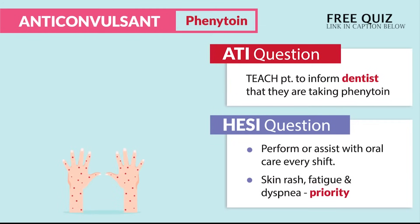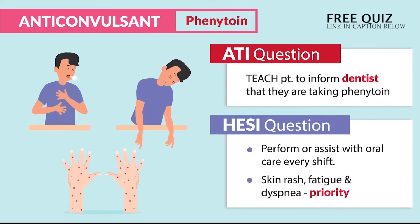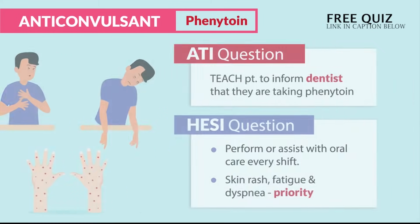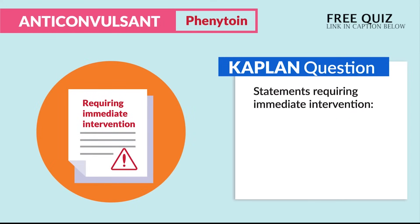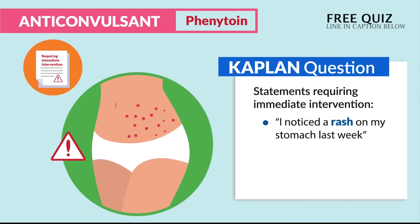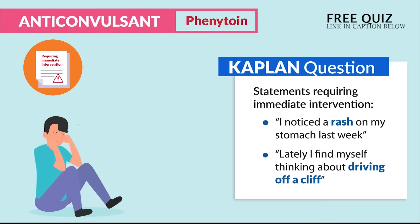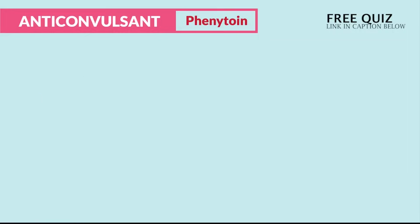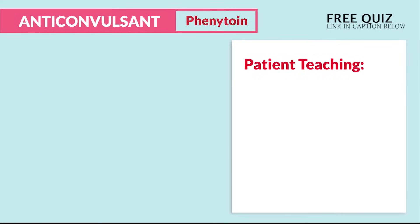A skin rash, fatigue, and dyspnea are priority. Any type of skin rash could mean Stevens-Johnson syndrome, which is very deadly. Kaplan mentions statements requiring immediate intervention, such as: 'I noticed a rash on my stomach last week' — that's deadly Stevens-Johnson syndrome. And 'lately I find myself thinking about driving off a cliff' — that definitely requires immediate intervention.